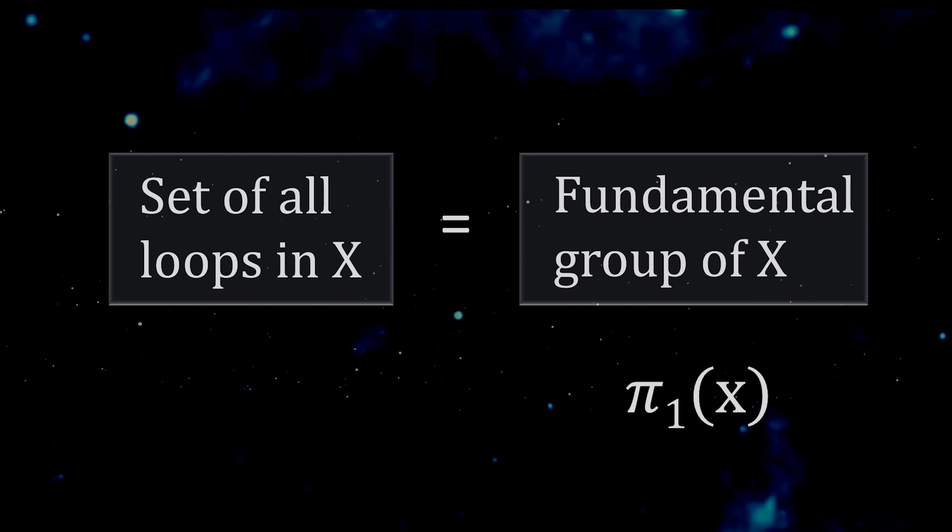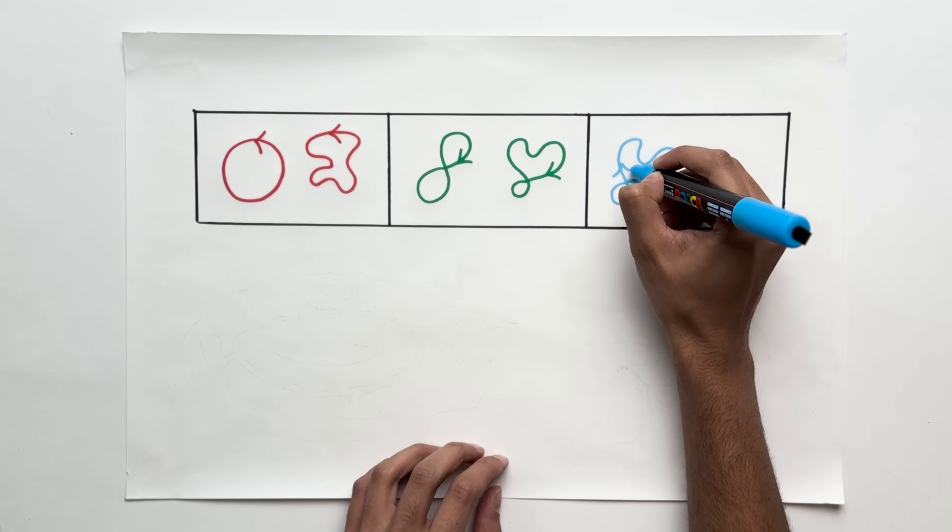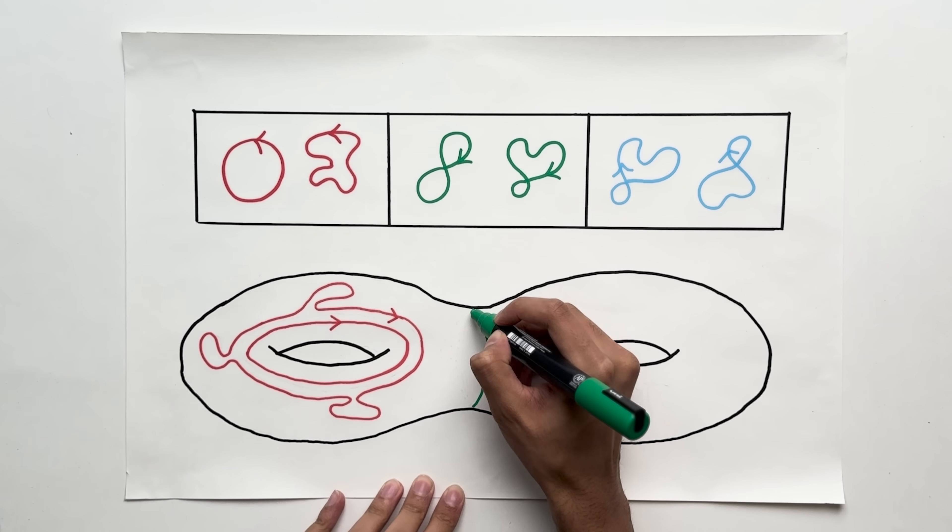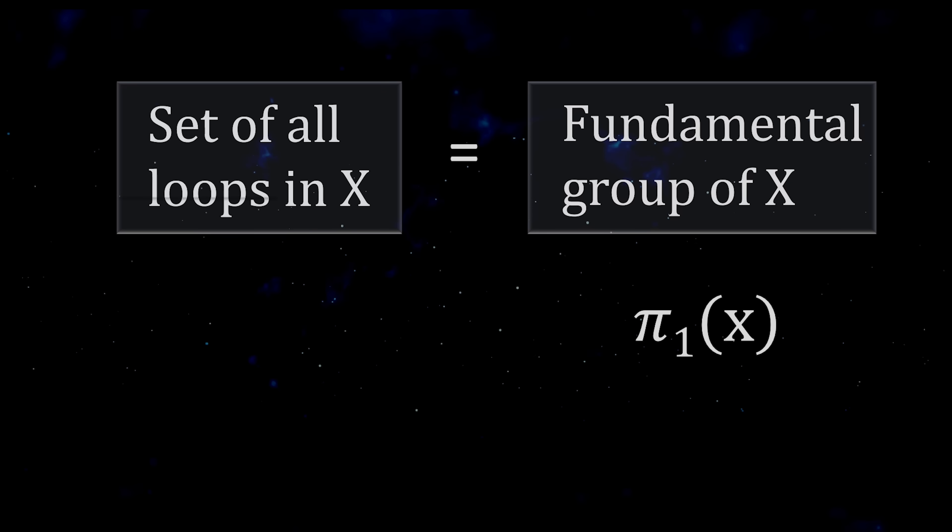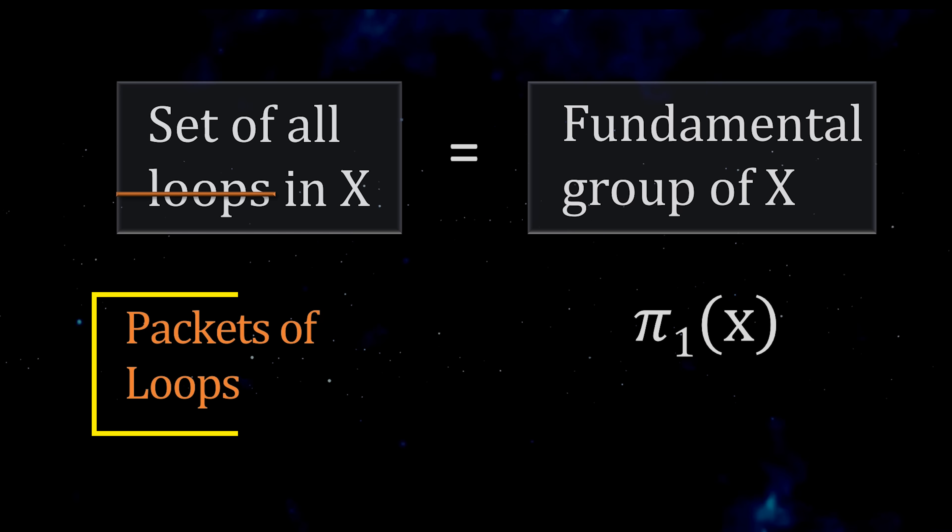Okay, so this is technically not right, because we're not looking at all loops in the space separately, but we're looking at packets of loops. That is, all the red loops are viewed as the same loop. All the green loops are viewed as the same loop, and so on. So really, we're looking at the set of all packets of loops in x. Each element of the fundamental group π₁ of x is a packet of loops.